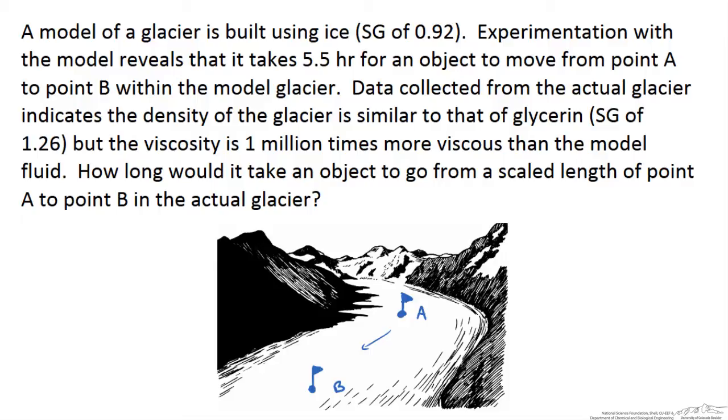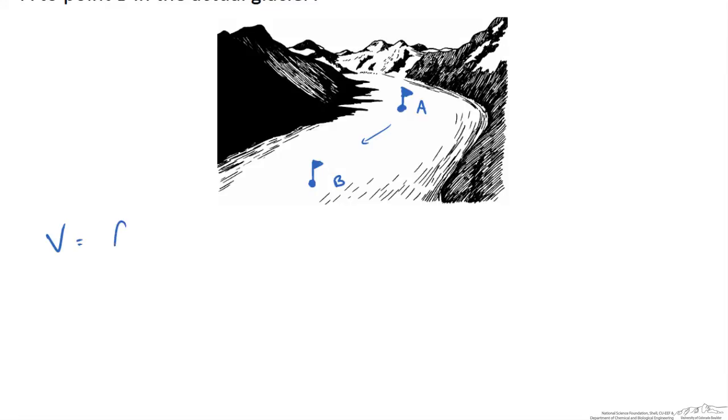First thing is we have to get some idea of how one variable is affected by others. So here we are going to look at the velocity of the glacier, and we are going to know that the velocity is going to be a function of the length that the glacier has to travel, its viscosity, its density, as well as the acceleration due to gravity.